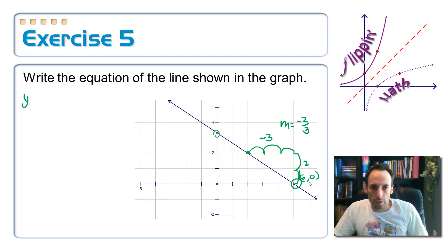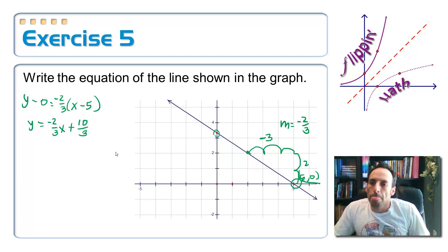Let's go ahead and write it in slope-intercept form. Distribute the slope. So y is equal to negative two-thirds x plus ten-thirds. Hey, does that number look like ten-thirds? That's three and a third. Kinda.